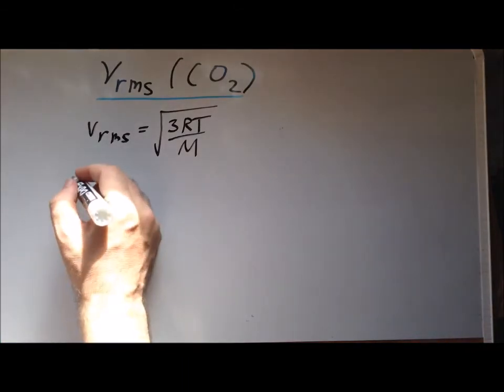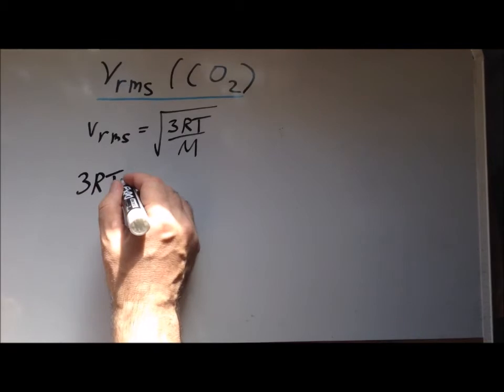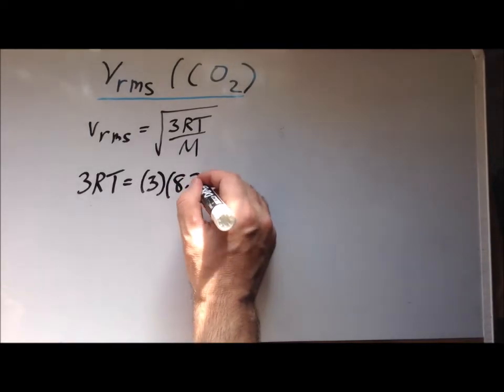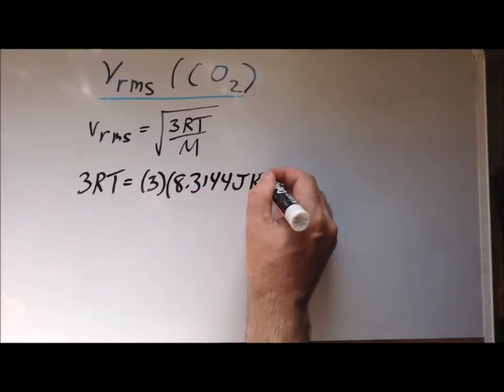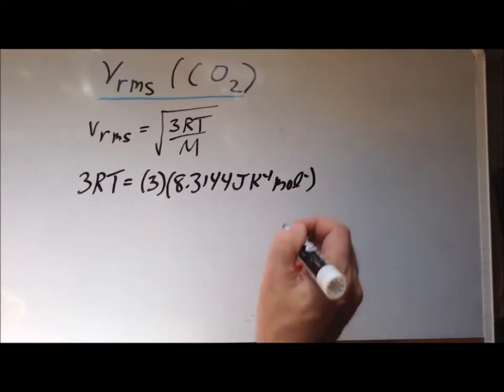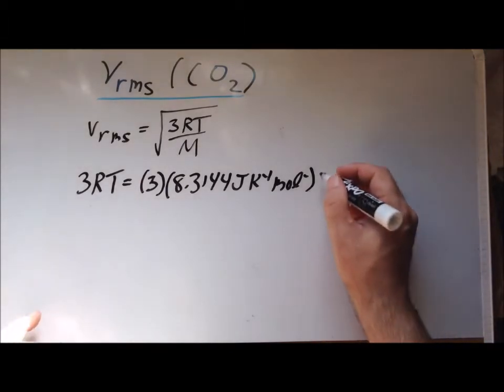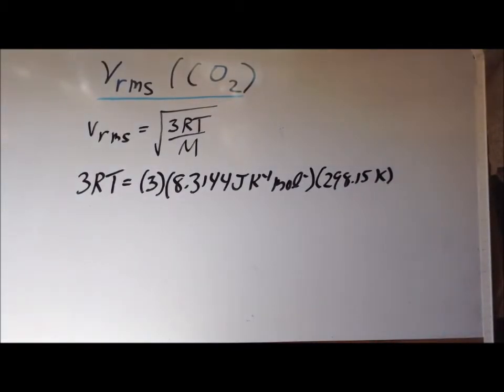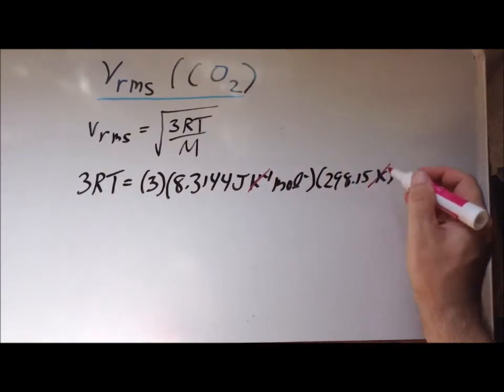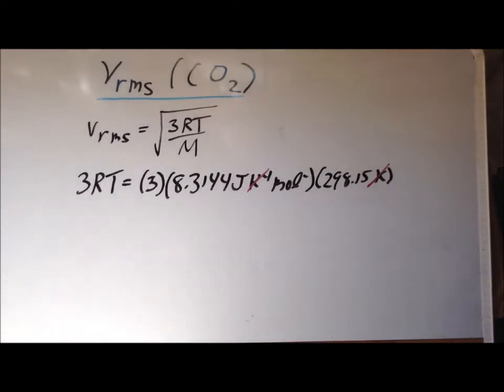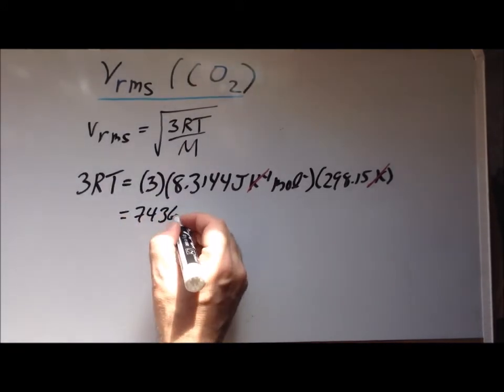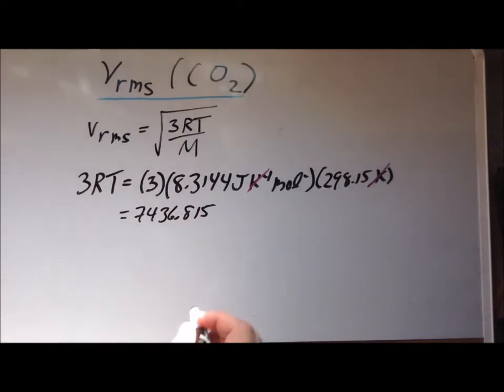Next, let us compute the value of 3RT. So this is going to be 3 times the gas constant, which is 8.3144, times the thermodynamic temperature, which is 298.15 Kelvin. Once we have done that, we notice that the units of Kelvins cancel. And simplifying further, you find that this expression is equal to 7,436.815, and our units are joules per mole.